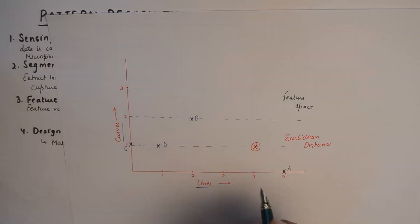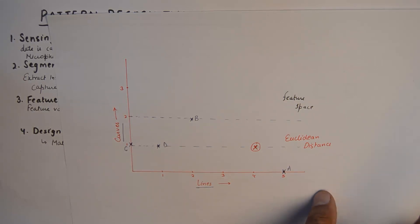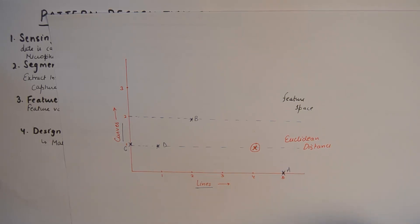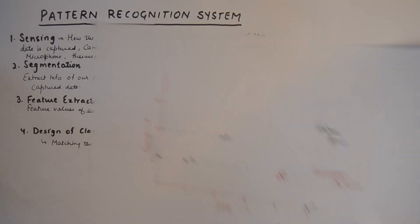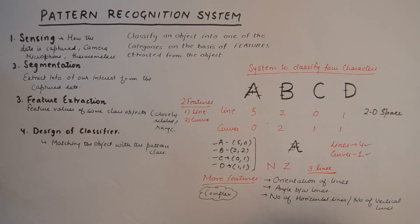And the reason why it recognizes that character as A is the minimum Euclidean distance of an object which is under inspection is the closest match to the class to which it belongs. I'll talk about Euclidean distance in a separate video, because this is one mathematical approach where the matching happens for the patterns.